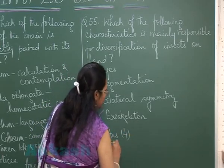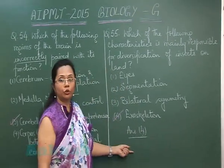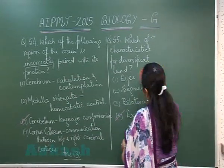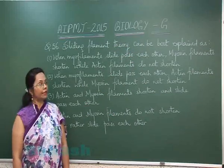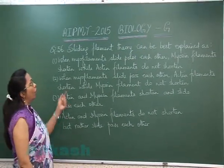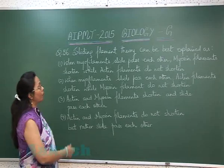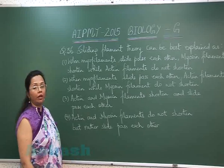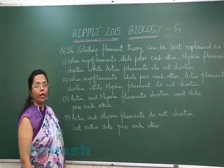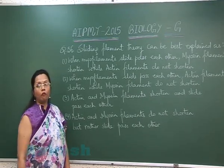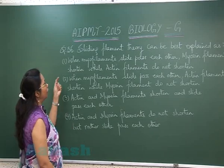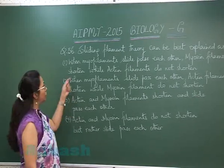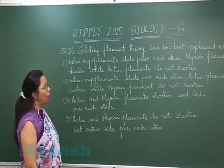That is the 4th choice. Question 56: According to the sliding filament theory, what would be the correct option? The sliding filament theory was given by Huxley and Huxley to explain the mechanism of muscle contraction. Option 1 says myosin filaments shorten — that itself is wrong, myosin filaments do not shorten.